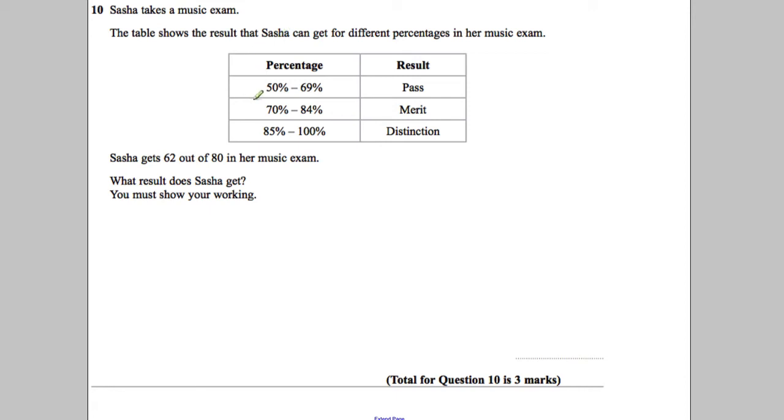Sasha takes a music exam. The table shows the result that Sasha can get for different percentages in her music exam. If she gets between 50 and 69%, she passes. If she gets between 70 and 84%, she gets a merit. And if she gets between 85 and 100%, she gets a distinction.